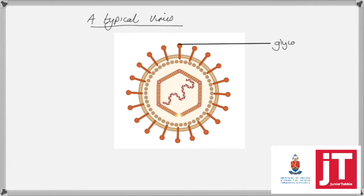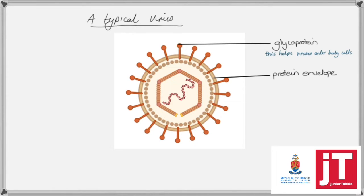The first identifiable part of this structure is the glycoprotein, which helps the virus to enter the body cells of the cell that it wants to infect. So this is quite an important structure to the virus. Next we're going to see the protein envelope, which is basically the protective outer covering to the inner viral genome. This helps the virus protect its genetic material and also helps the virus evade the immune function of its host body.